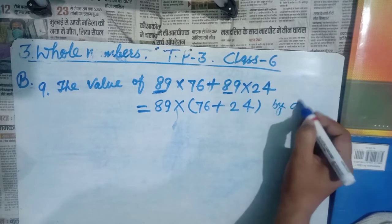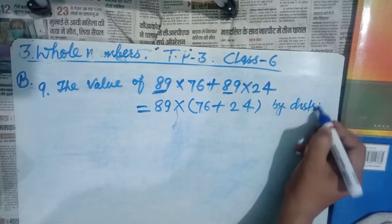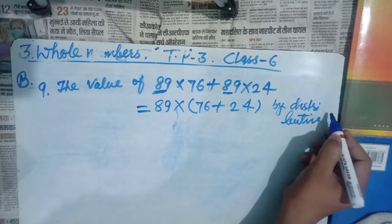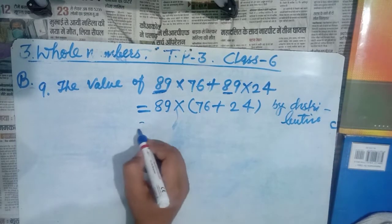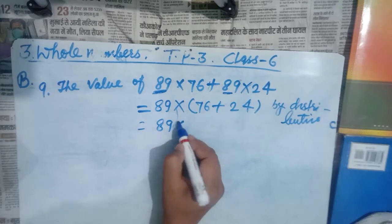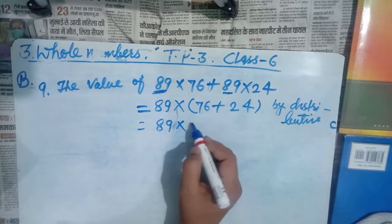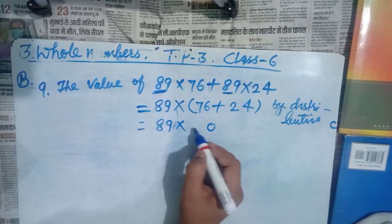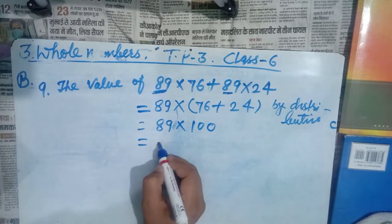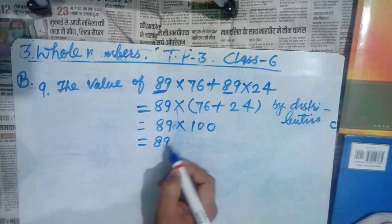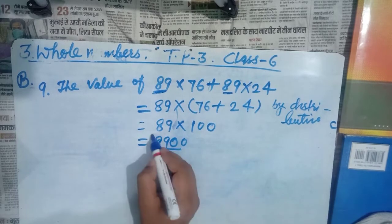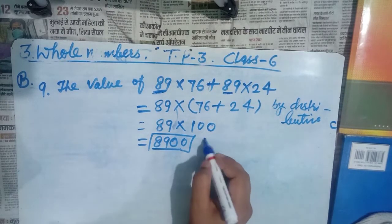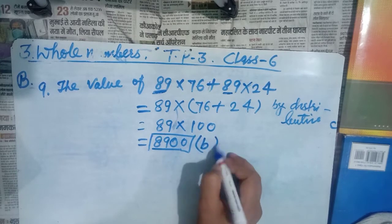By the distributive law, this becomes 89 × 100. Now multiply: 89 × 100 = 8900. Please match this with the options — yes, this is option B. Your answer is B.